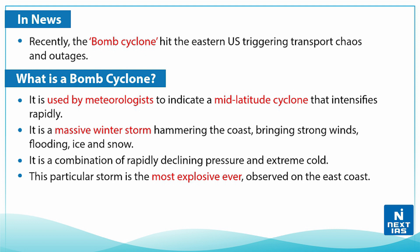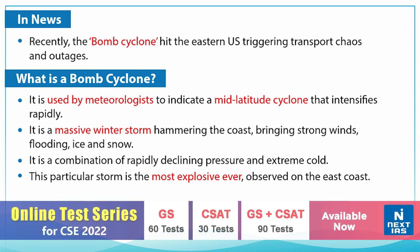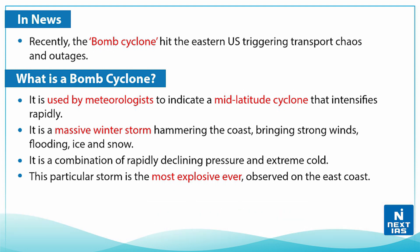This term is used by meteorologists to indicate a mid-latitude cyclone that intensifies rapidly. Mid-latitude refers to the spatial region between approximately 23 degrees north to 23 degrees south, which generally consists of the subtropical or temperate zones. It is a massive winter storm hammering the coast, bringing strong winds, flooding, ice, and snow, and is a combination of rapidly declining pressure and extreme cold.